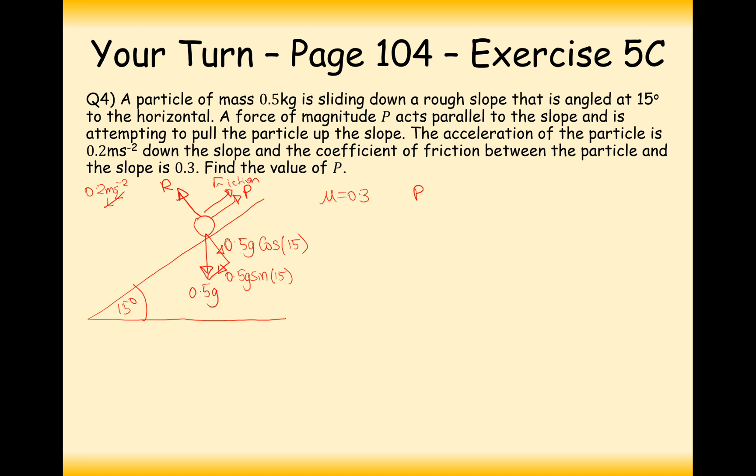The first thing we need to do then is to resolve in the perpendicular direction to work out the value of R so that we can use F equals mu R. In this case, R is going to equal 0.5 g cos 15. Then the value of friction when I use F equals mu R is going to be 0.3 times 0.5 g cos 15. And I can simplify this to 0.15 g cos 15.